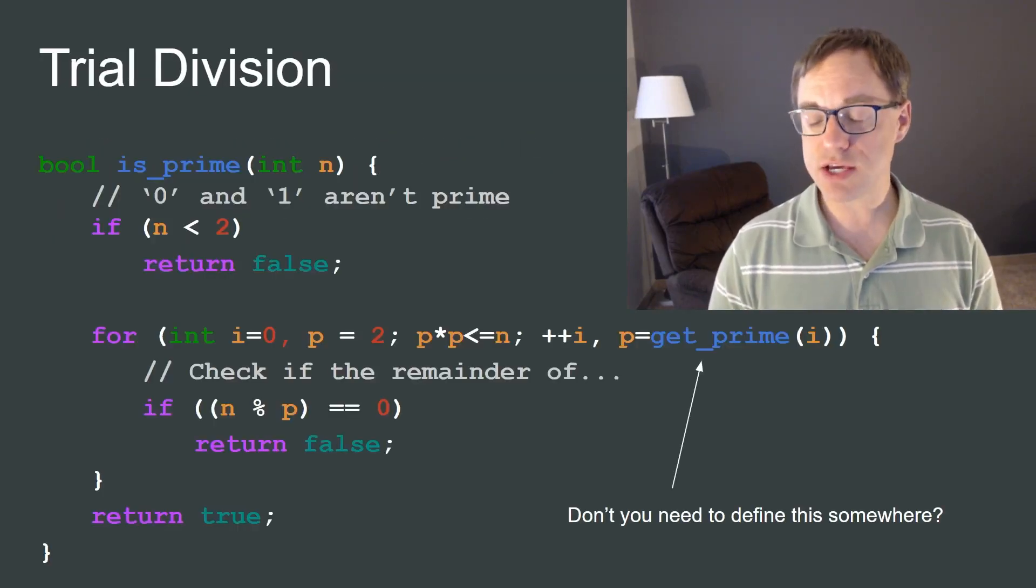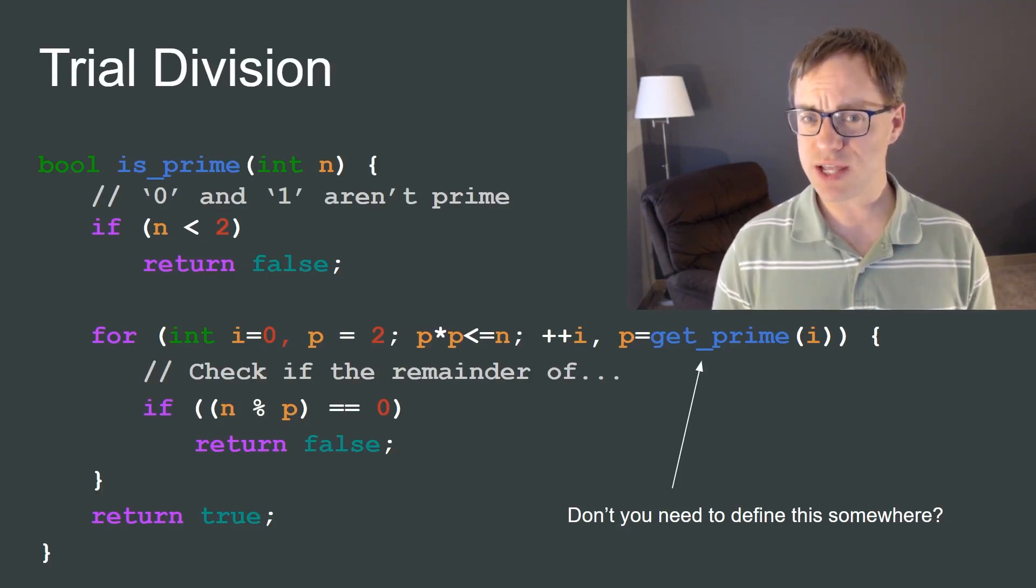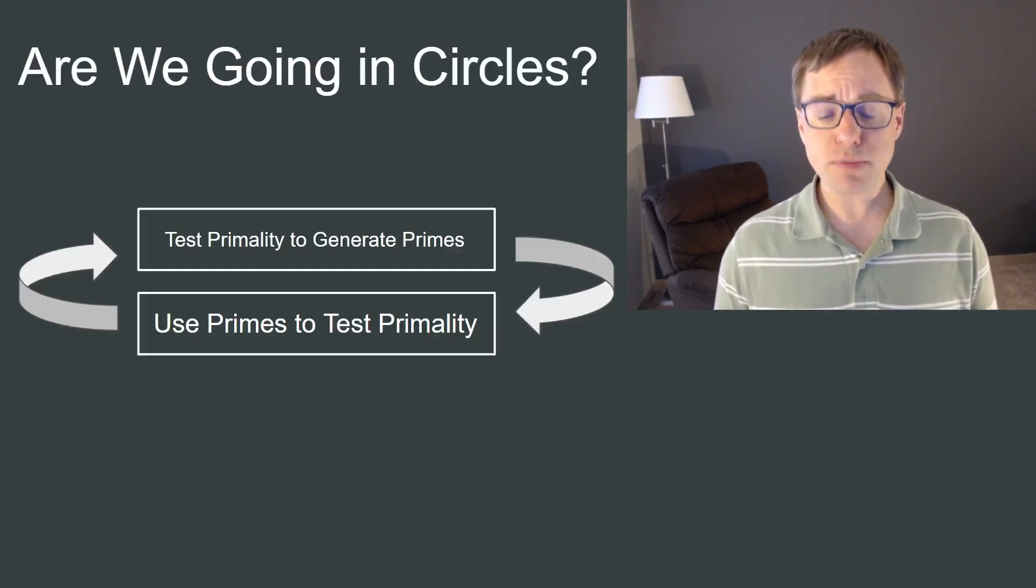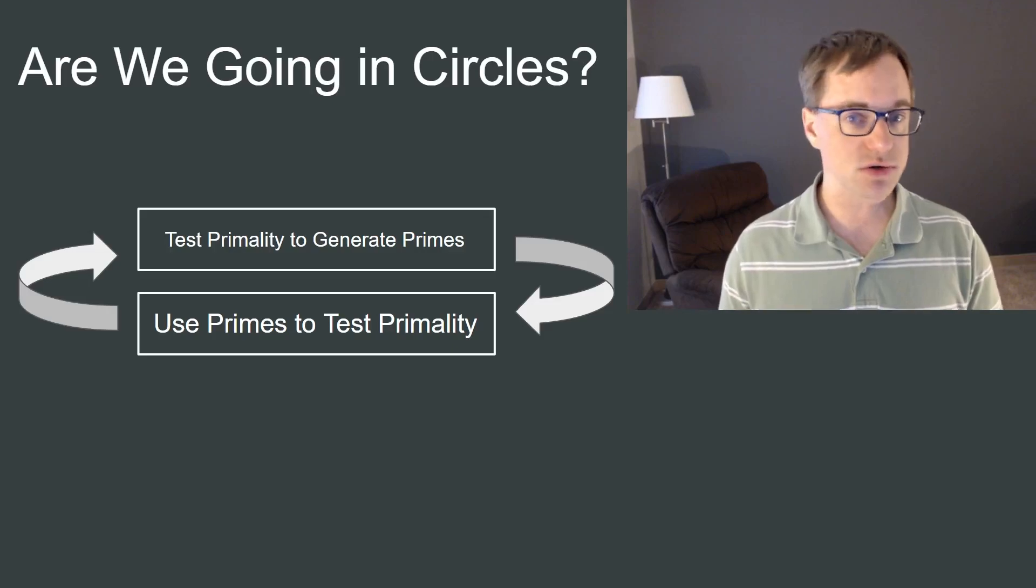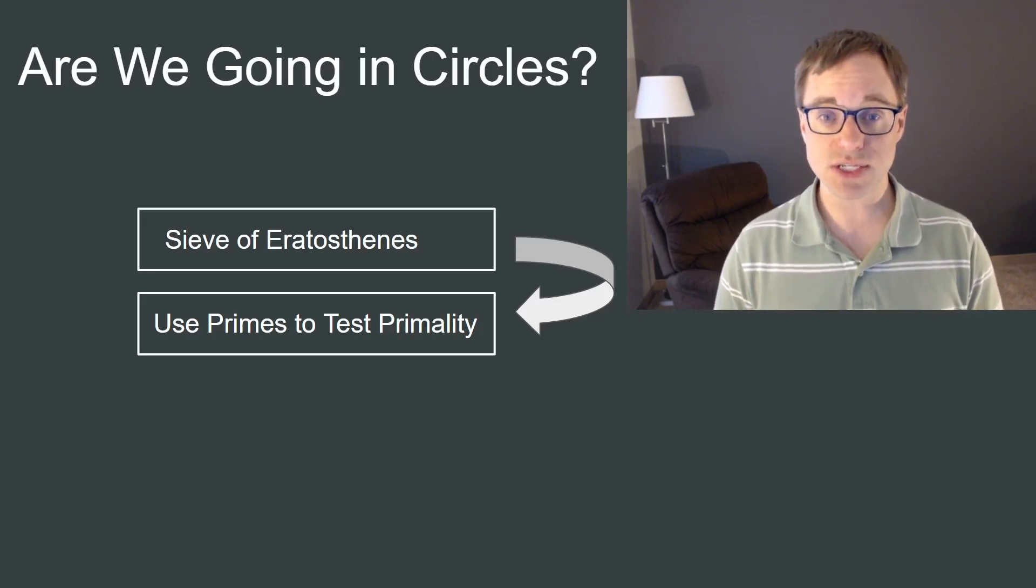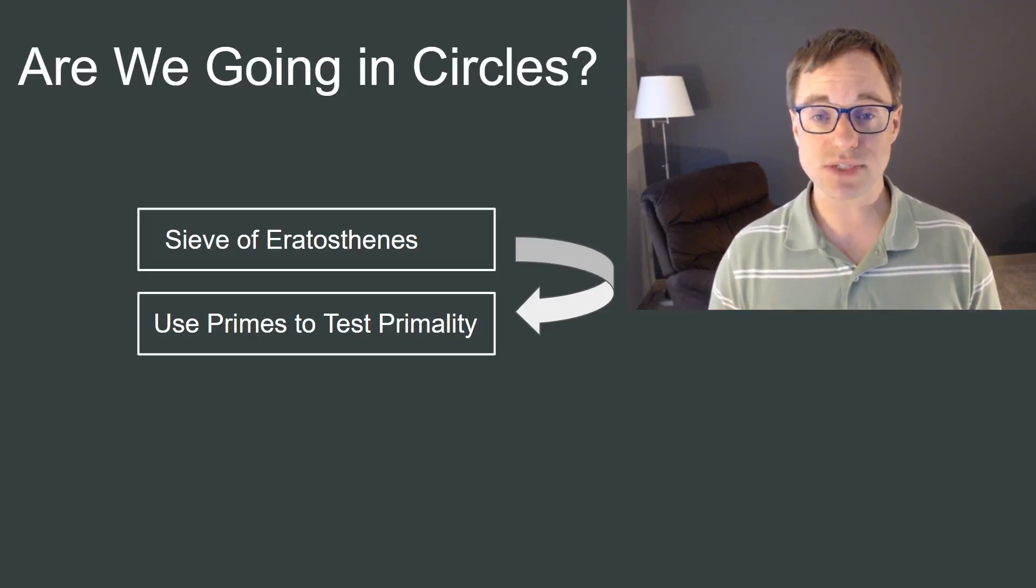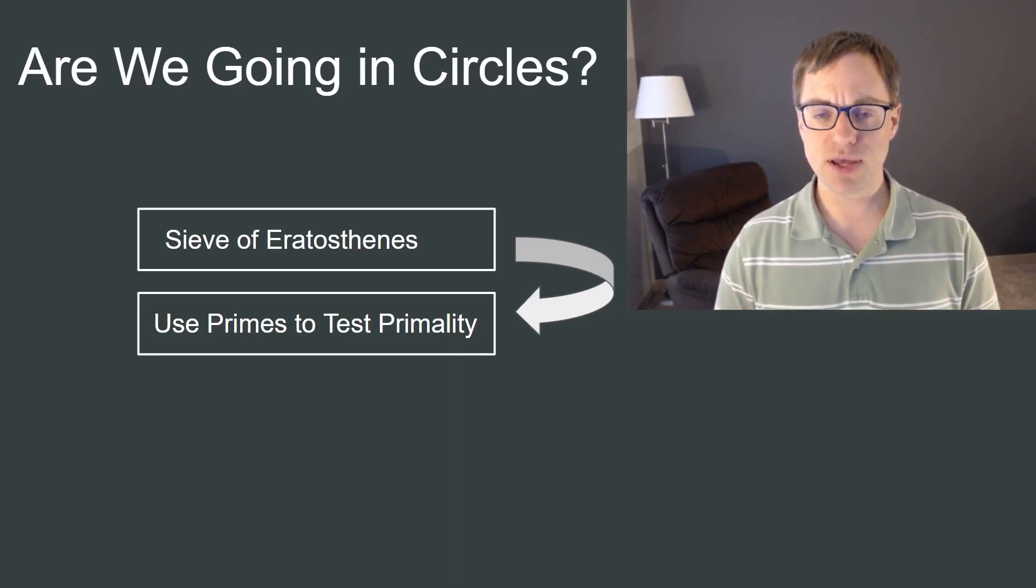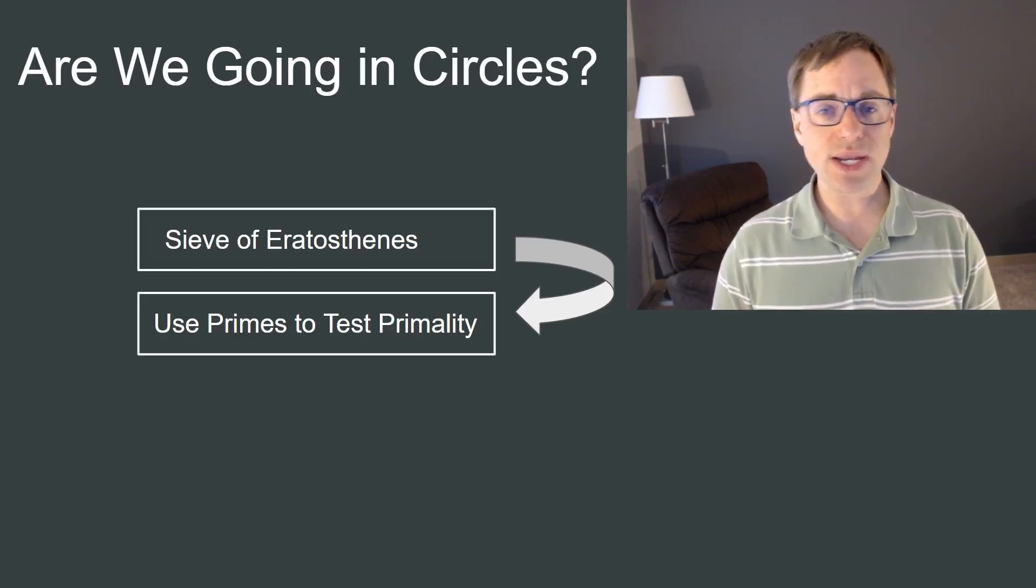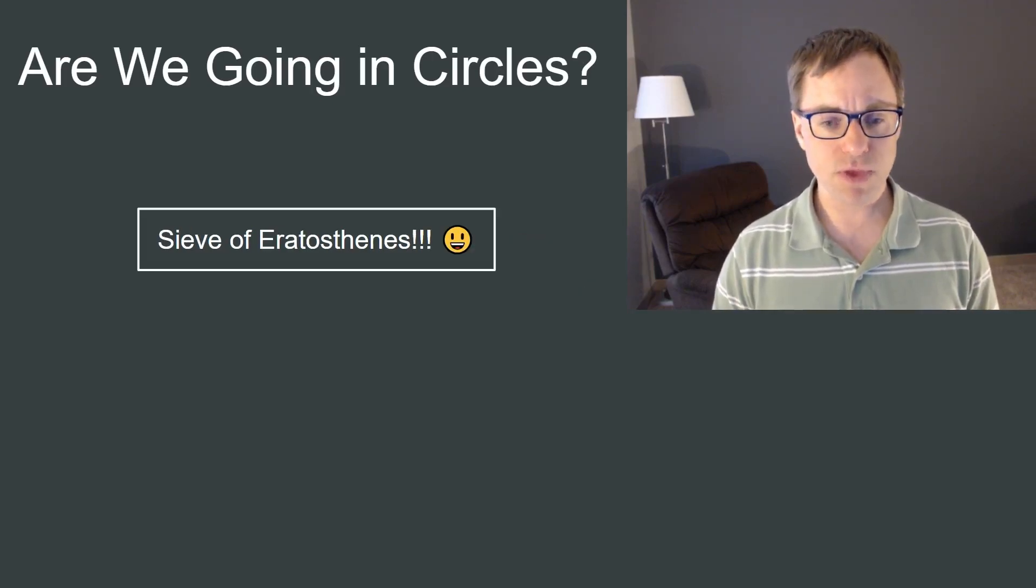Now, at best, you might accuse me of skipping over some potentially important implementation details, but at worst, it looks like we might be headed for some kind of infinite regress. That is, if our implementation of get prime itself requires some kind of primality testing, aren't we just going in circles? Well, fortunately, there's a separate algorithm for generating primes called the sieve of Eratosthenes. So we can use that algorithm to generate primes, and then use those primes to speed up our primality testing. But if we have an algorithm for generating primes, why do we need a separate algorithm for doing primality testing? Can't we just use the sieve of Eratosthenes for both?